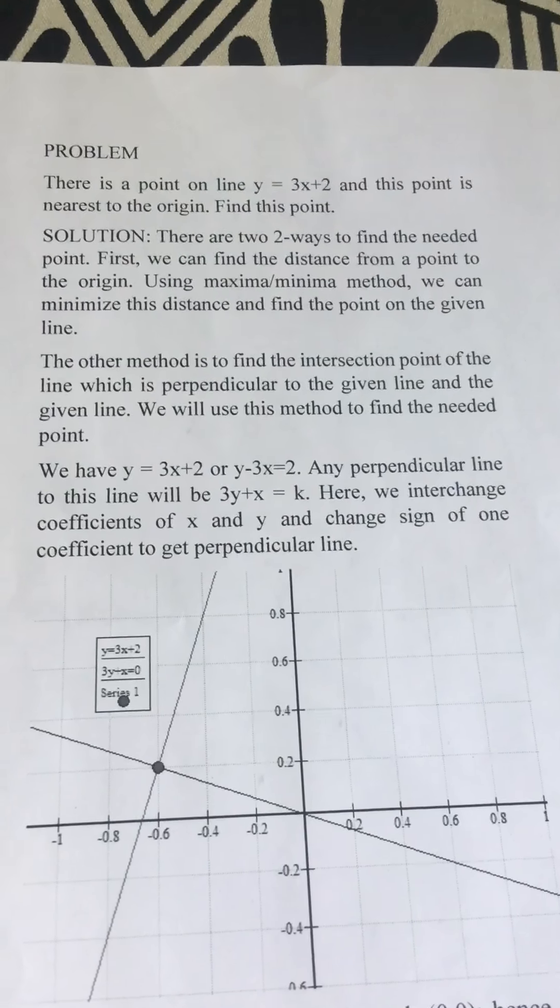See, this line is y = 3x + 2. Then perpendicular line is passing through (0,0), hence k will be equal to 3 × 0 + 0 = 0. Hence perpendicular line is given by 3y + x = 0.